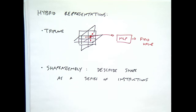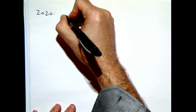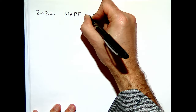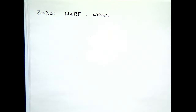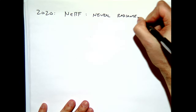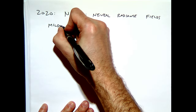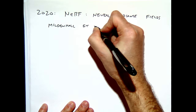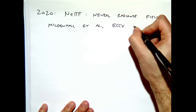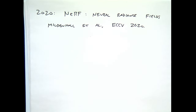The thing that took the computer vision world by storm was NERF. Basically, 2020 was the year of NERF, which stands for Neural Radiance Fields, by Mildenhall et al. in ECCV 2020. The paper was well known and disseminated well before it was officially published — it appeared on arXiv and people just went crazy about it.